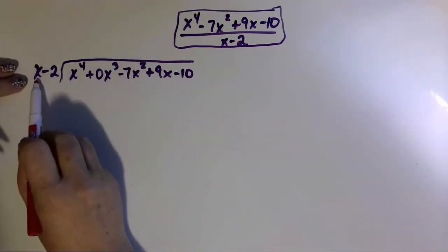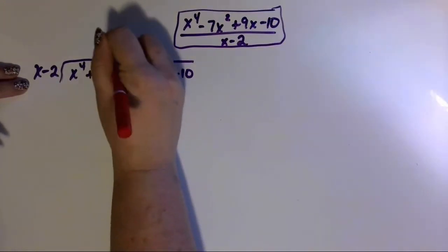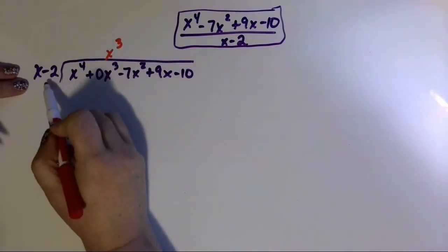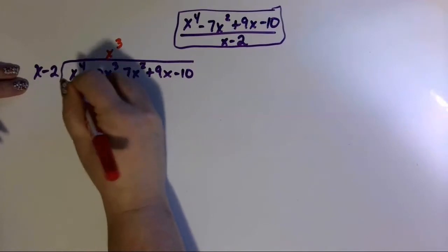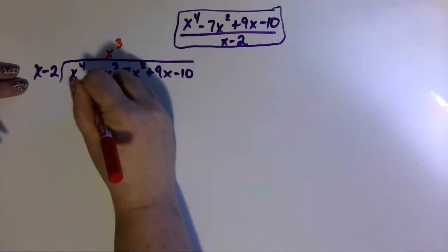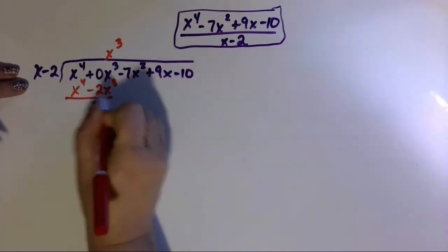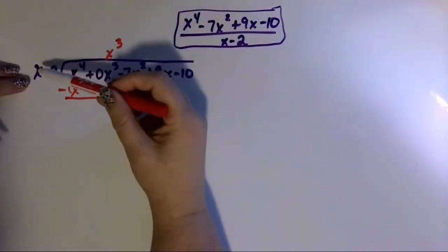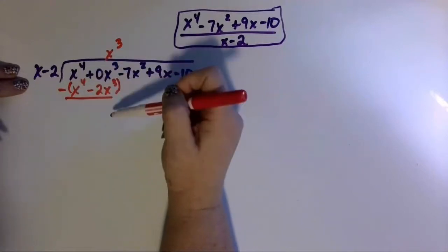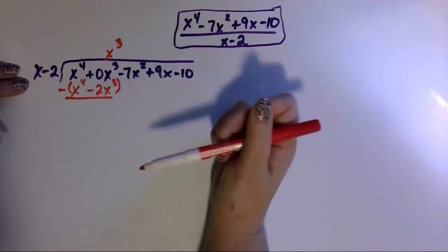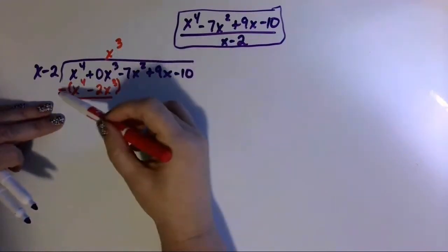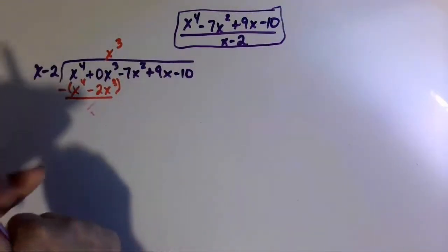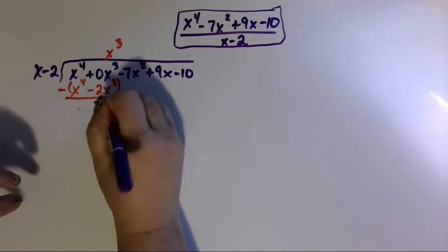The algorithm for long division: I ask myself, what do I multiply times x to get x to the fourth? That would be x cubed. Then I multiply that times both terms in my divisor. x cubed times x is x to the fourth; x cubed times negative 2 is negative 2x cubed. Draw a line, change the sign, and subtract. x to the fourth minus x to the fourth is 0, and 0x cubed minus a negative gives positive 2x cubed.